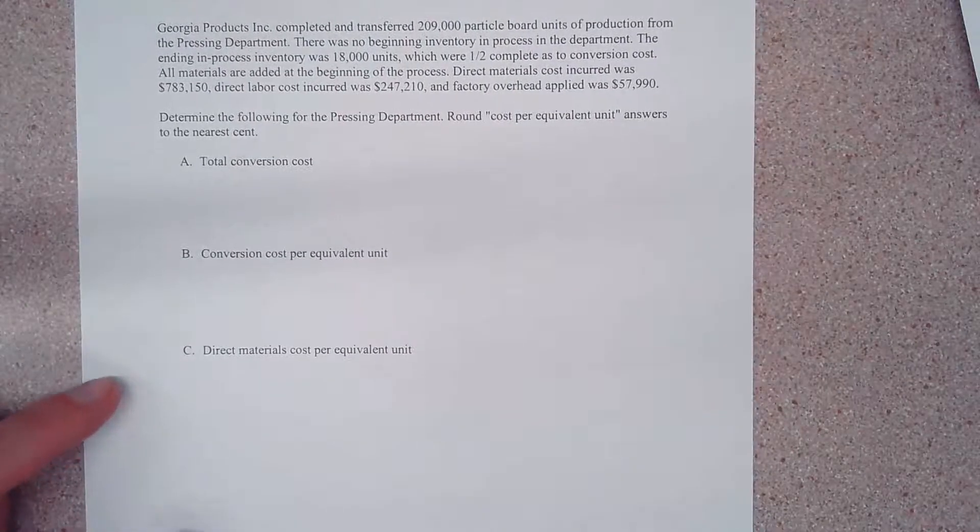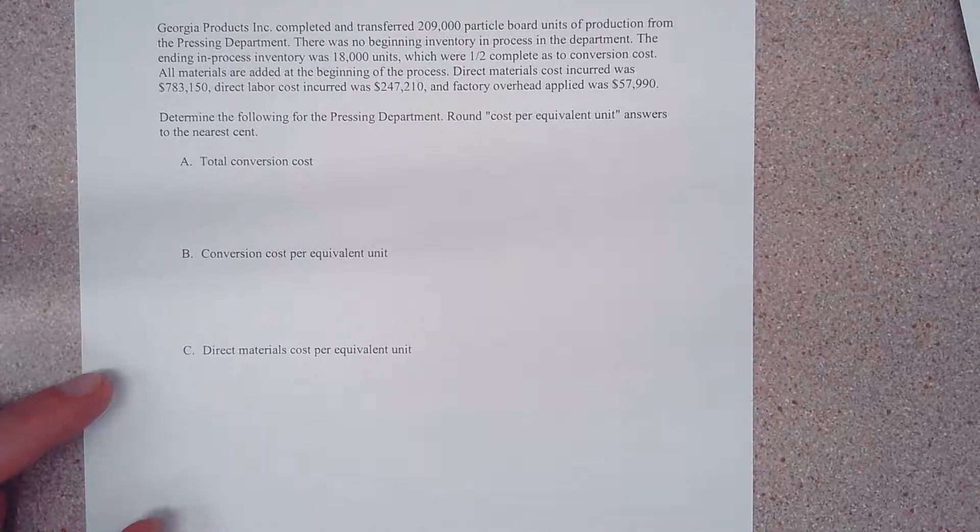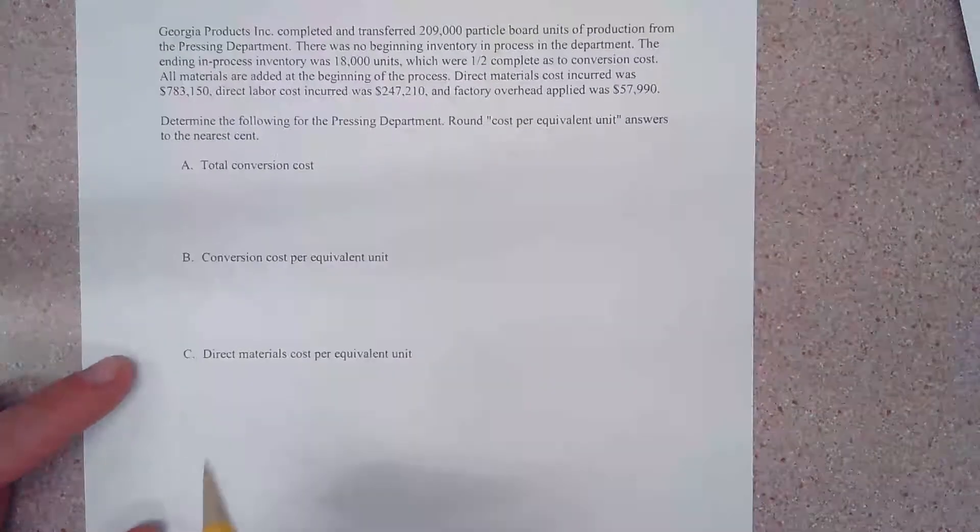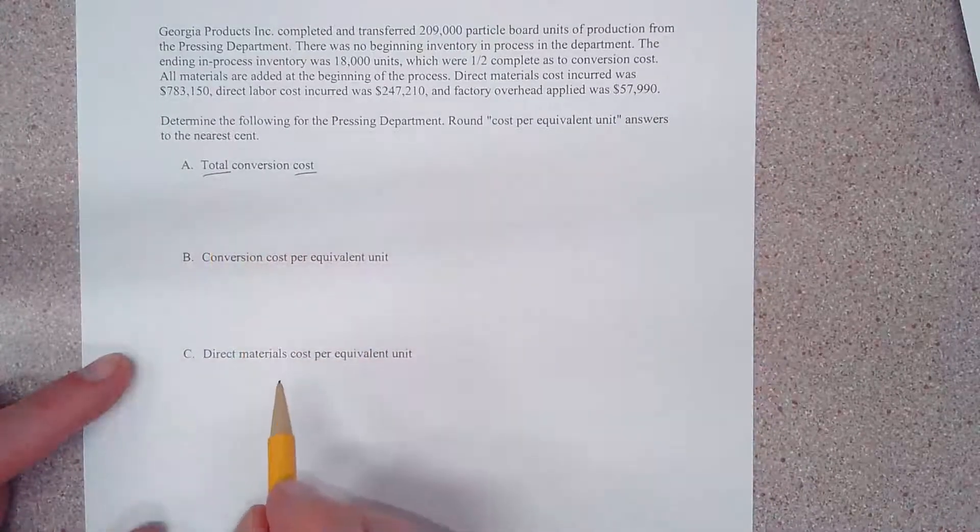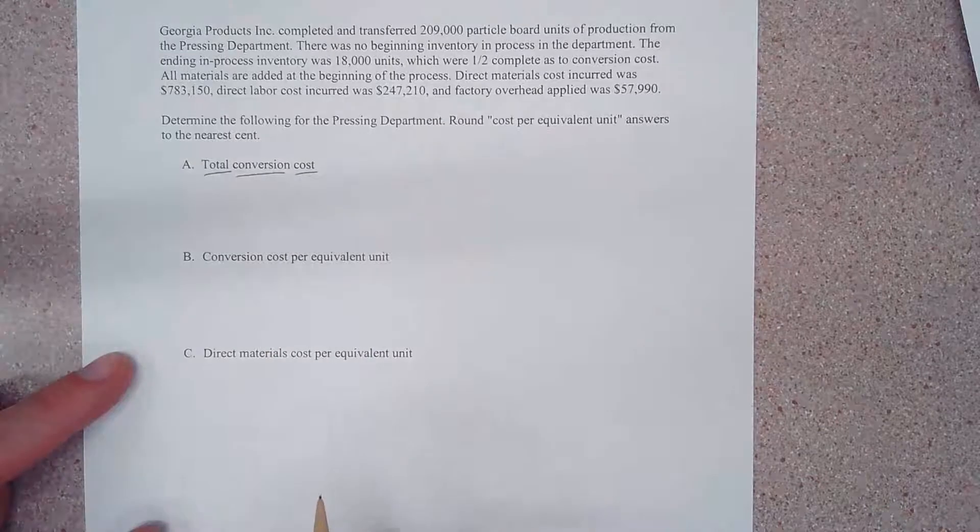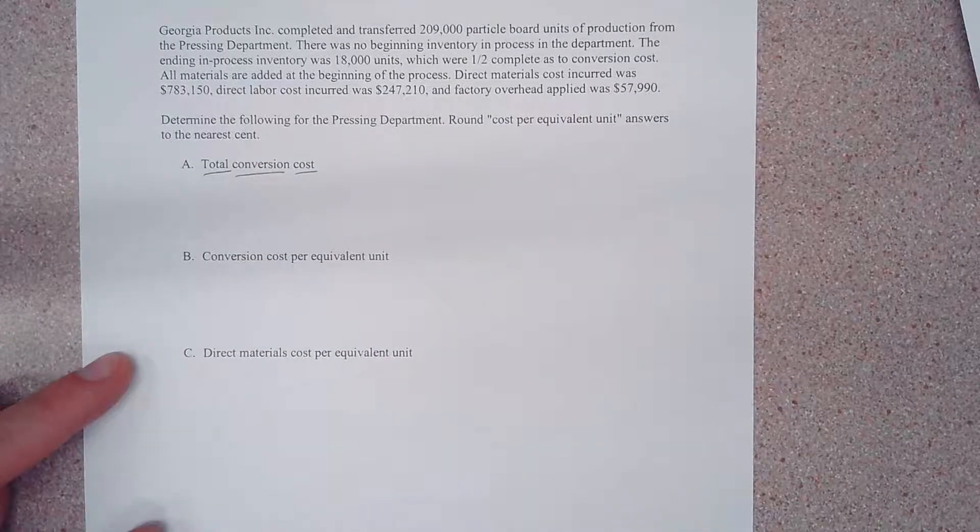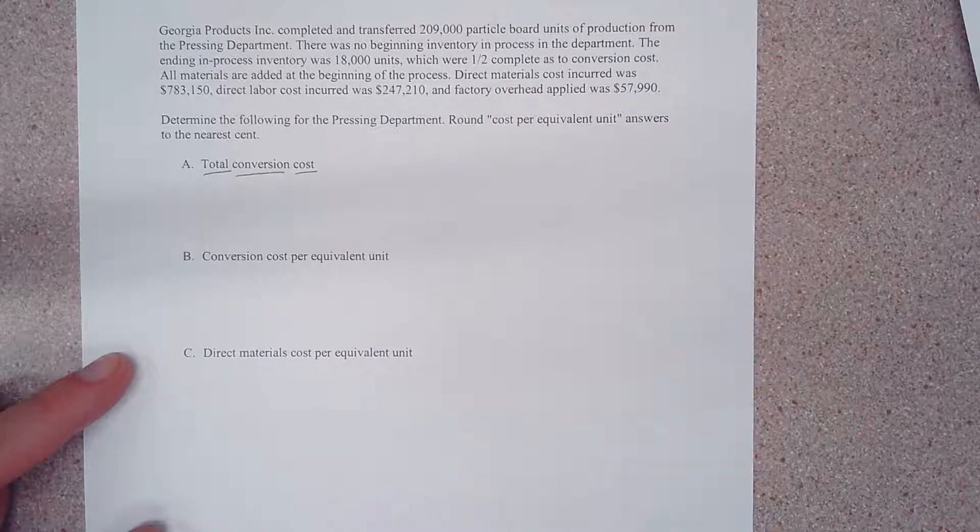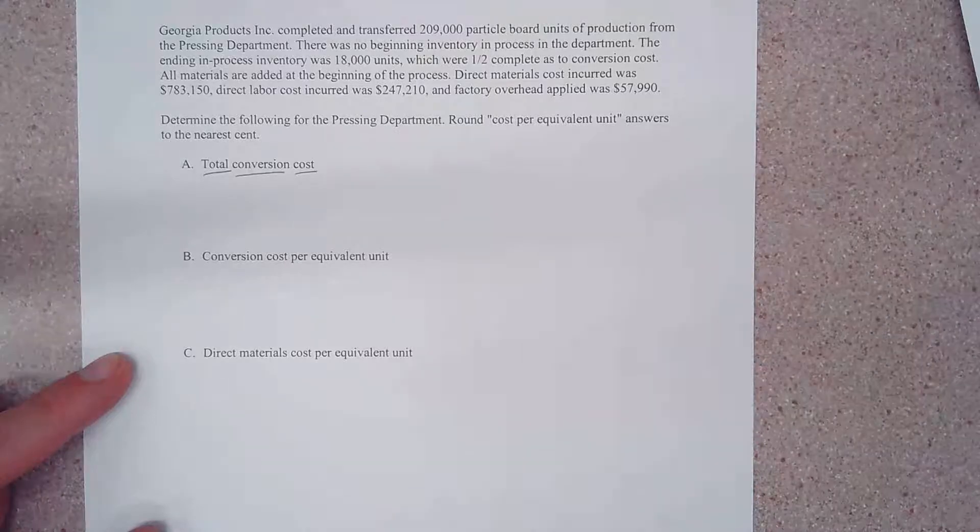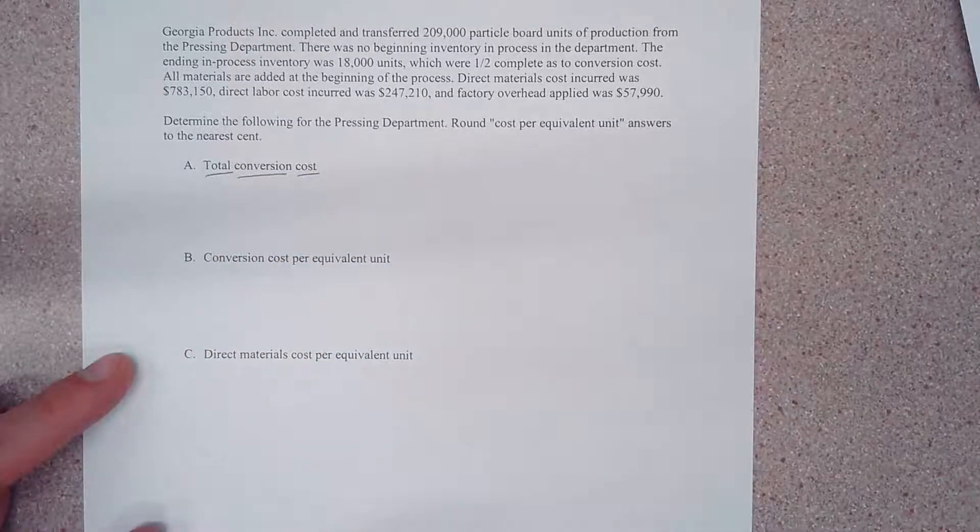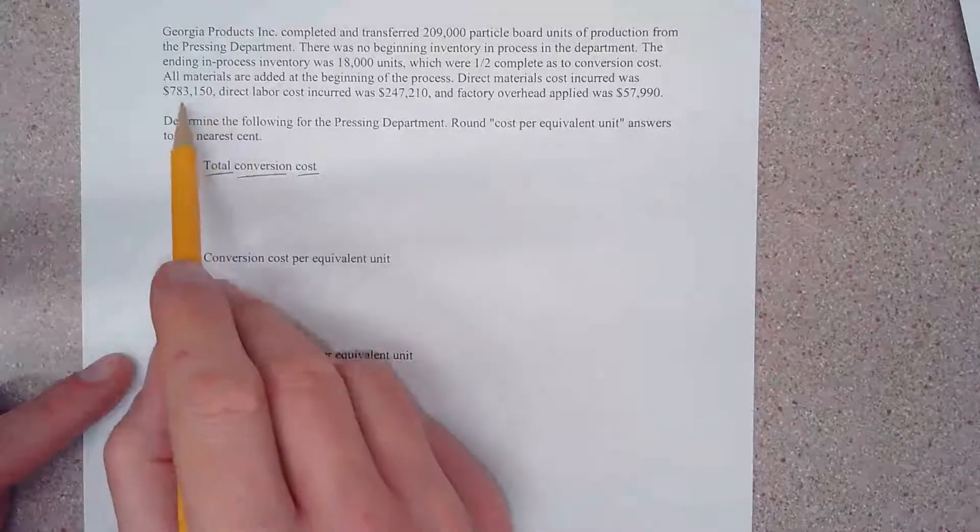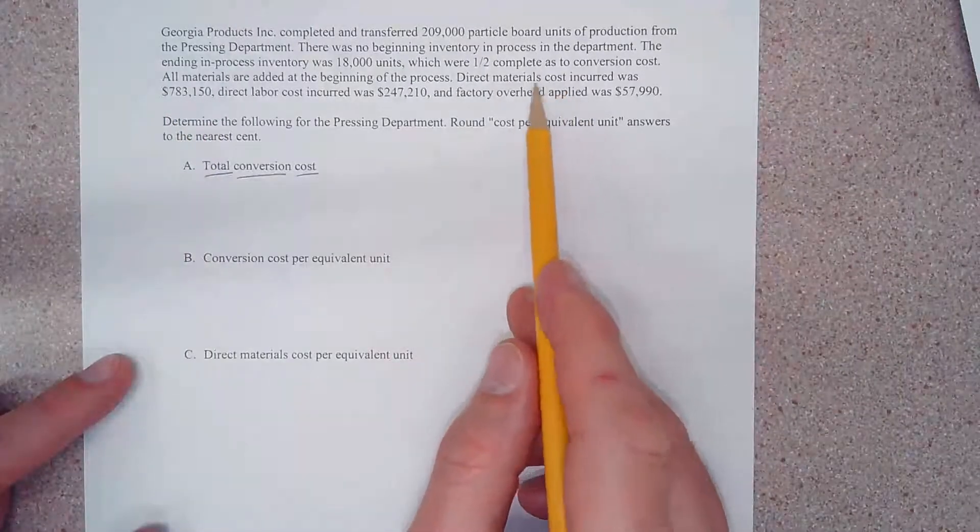It says what is total conversion cost. So if we're talking about, look really we can underline every word in this, right? Because they want a total but they're only talking about conversion costs and we are in fact talking about cost, so we know it's going to be a dollar amount.